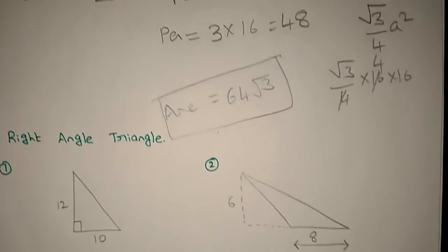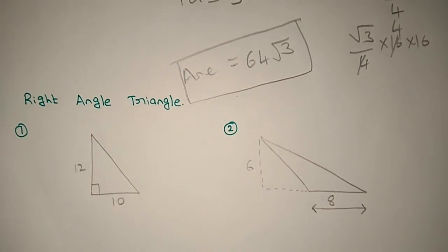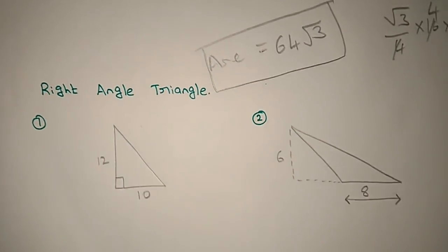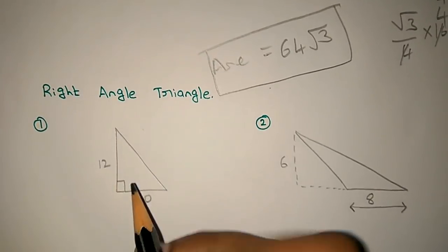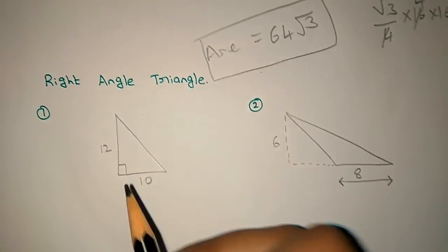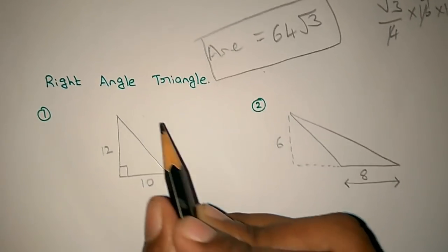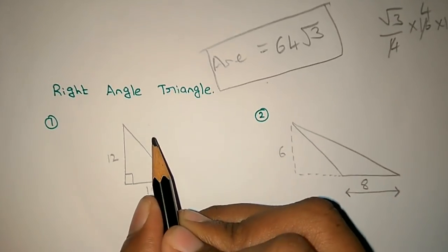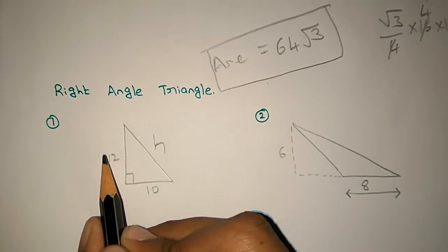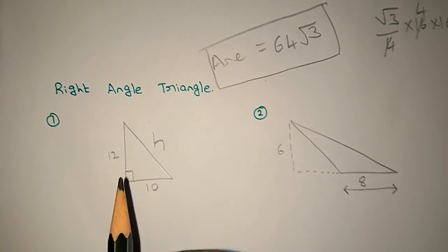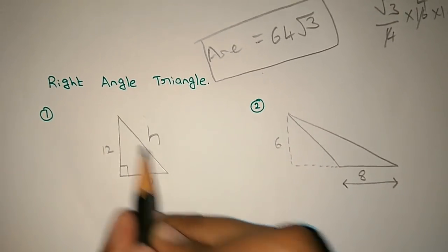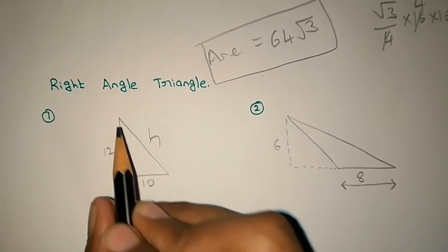Next is the Right Angle Triangle. In a right angle triangle we have the hypotenuse, opposite, and adjacent sides. This is the basic shape of a right angle triangle.